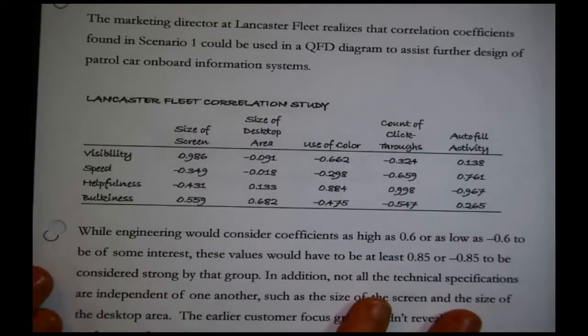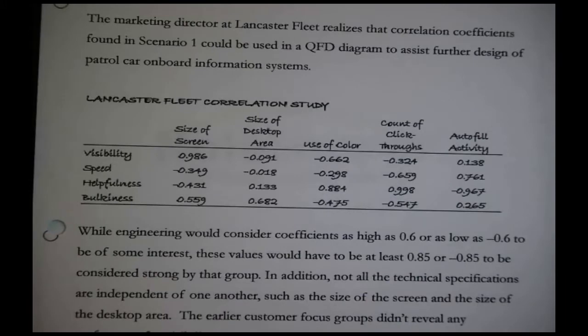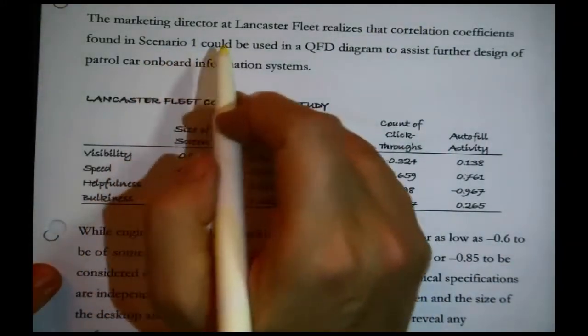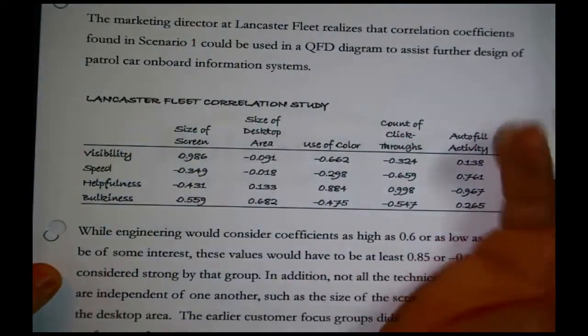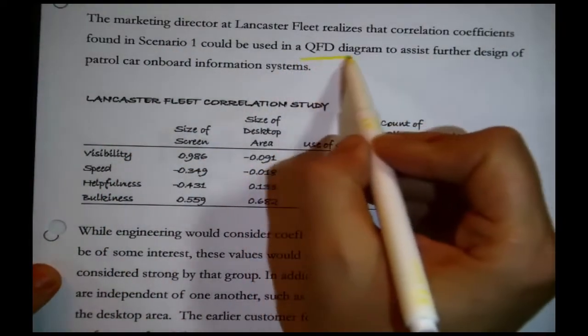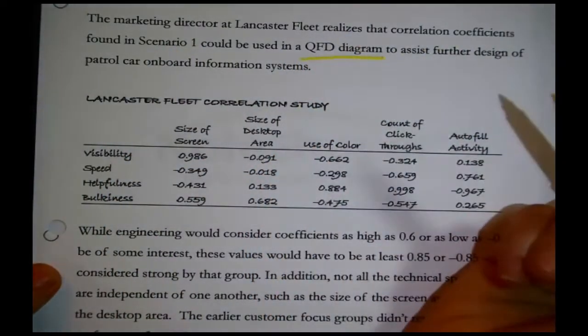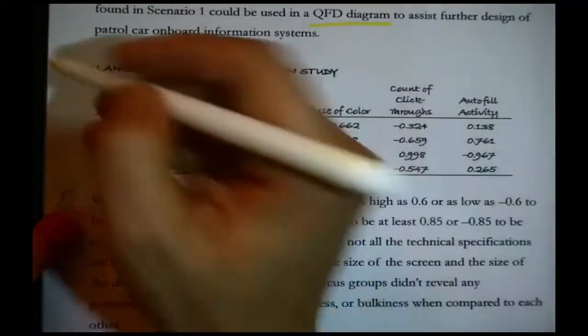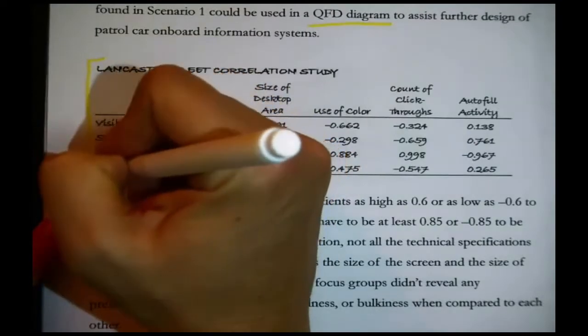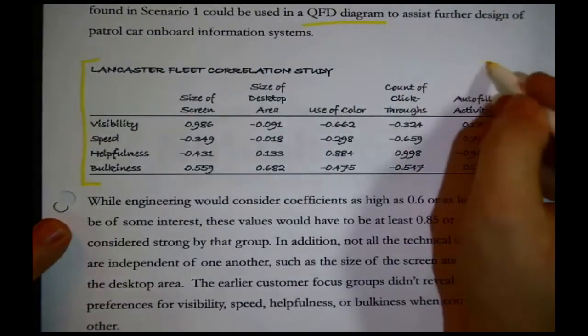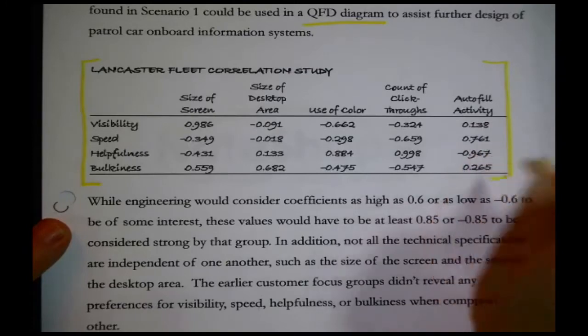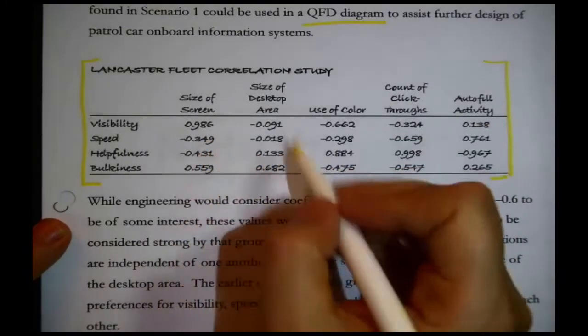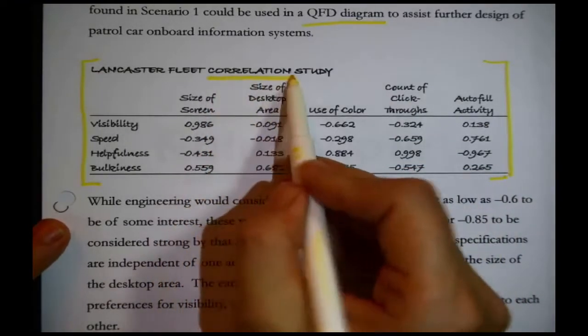Let's look. The marketing director at Lancaster Fleet realizes that correlation coefficients found in Scenario 1 could be used in a QFD diagram to assist further design of patrol car onboard information systems. And then there's this great big table of data. What are these? These numbers are correlation coefficients.